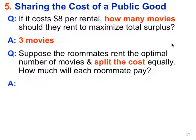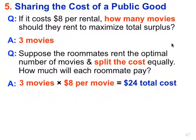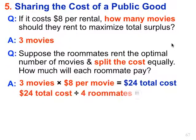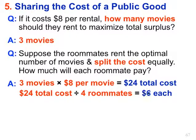The follow-up question: suppose the roommates rent the optimal number of movies — which is 3 — and split the cost equally. How much will each roommate pay? This is simple math: 3 movies times $8 per movie gives a total cost of $24. Divided by 4 roommates, that's $6 each. If you got the 3-movie answer right, this should have been easy.